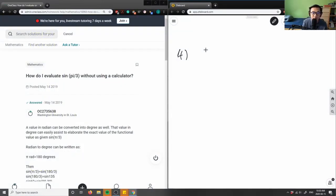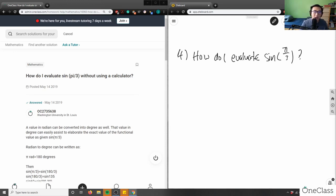So it says, how do I evaluate sine pi over 3 without using a calculator? I'll just say with that, because I'm not going to use a calculator for this. So how would I do that?